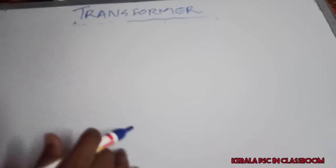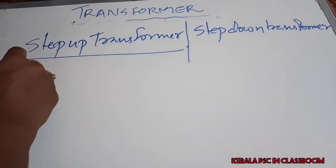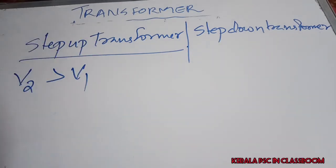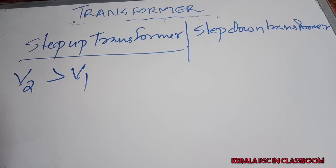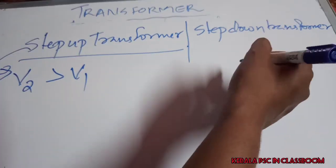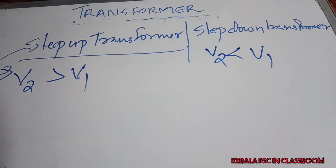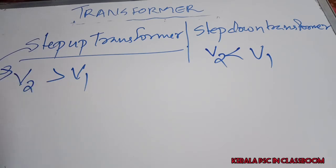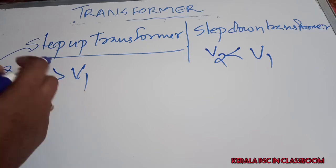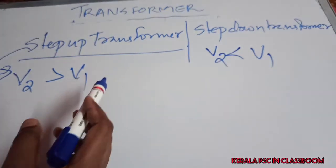There are two types of transformer: step-up and step-down. If the secondary side voltage V2 is greater than the primary side voltage V1, it is called a step-up transformer. If the secondary side voltage is less than the primary side voltage, it is called a step-down transformer.